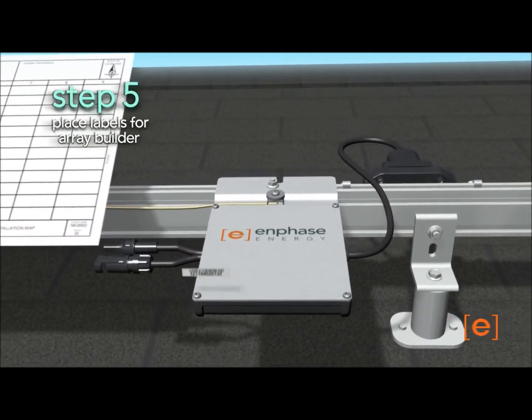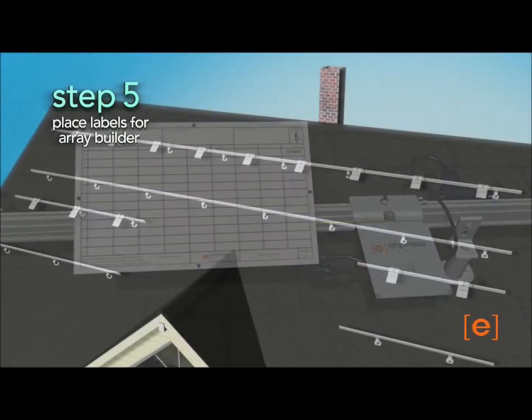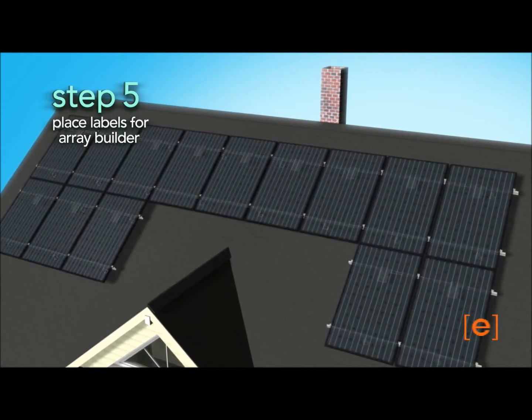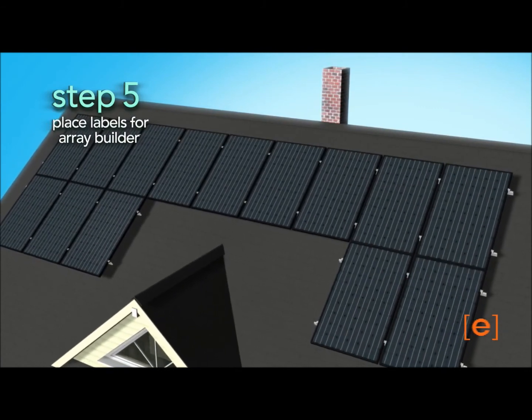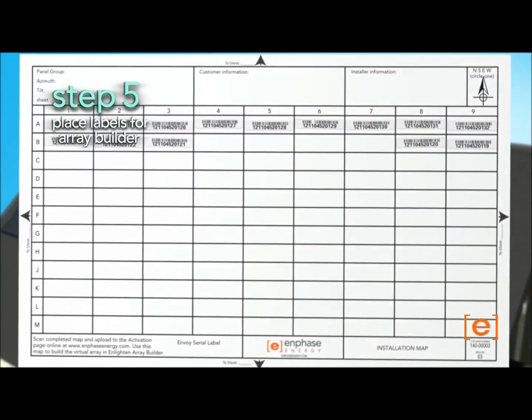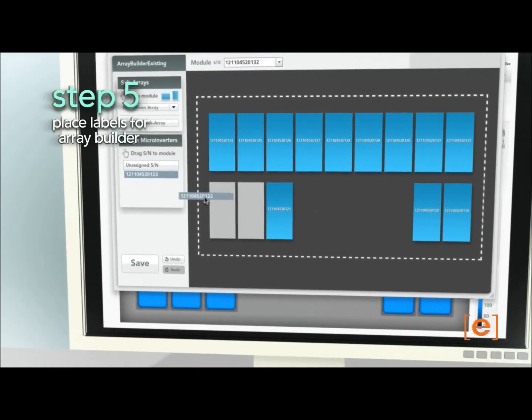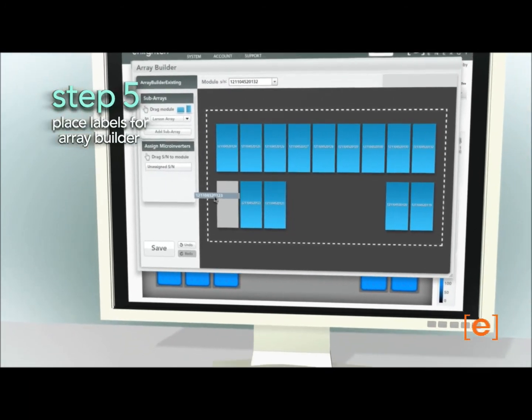Finally, use the labels to identify the location of each microinverter, and use the Easy Online ArrayBuilder utility to enable the array to be viewed in the Enlighten monitoring system.